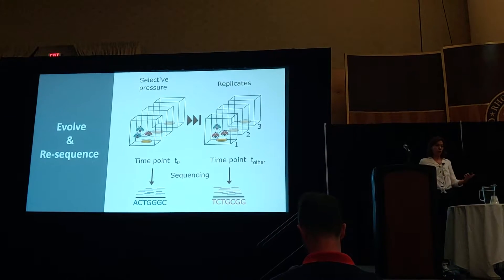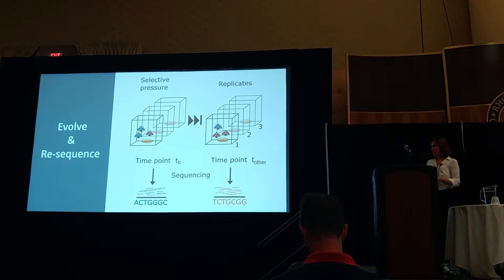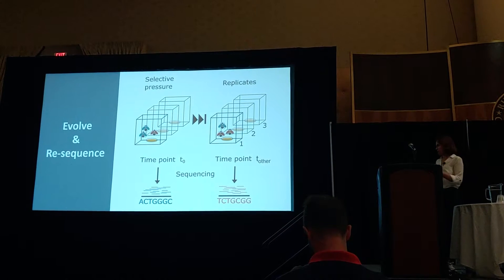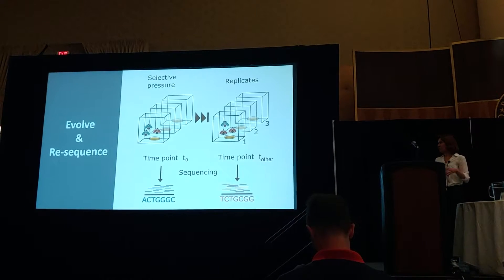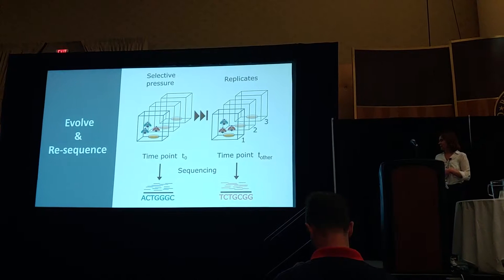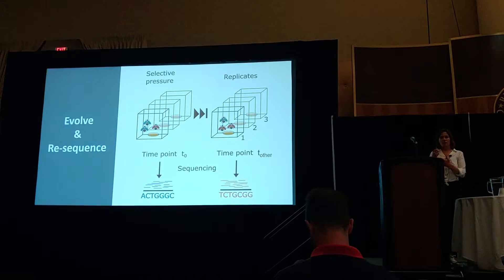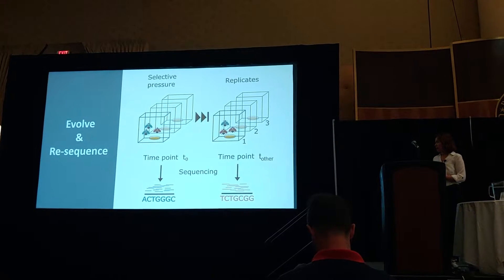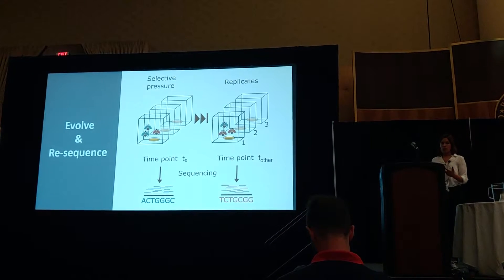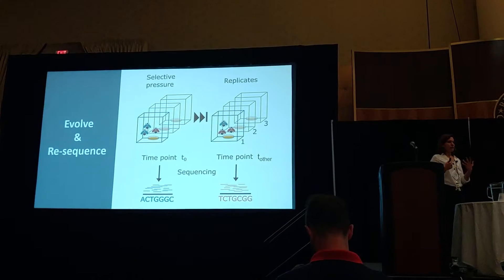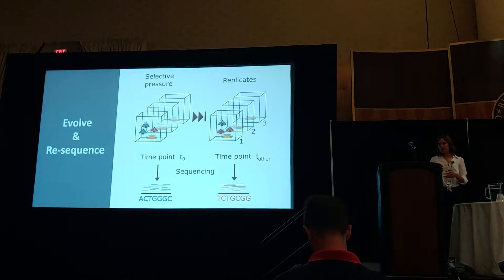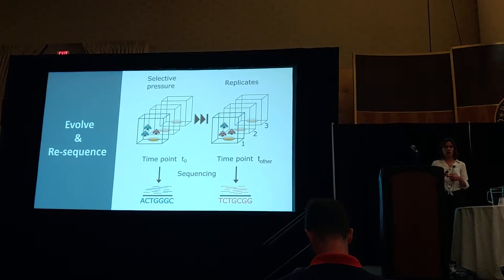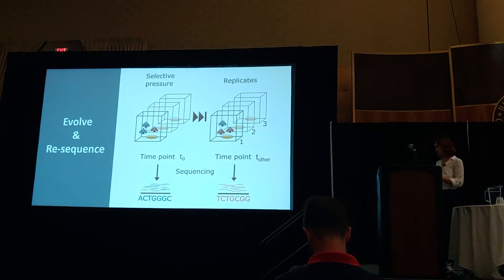What you would do is run a certain number of generations, sample these populations, and see the different types of alleles in the lab. But most importantly, what you need to do is replicate these populations, because you need to account for consistency in the response to selection in these populations.